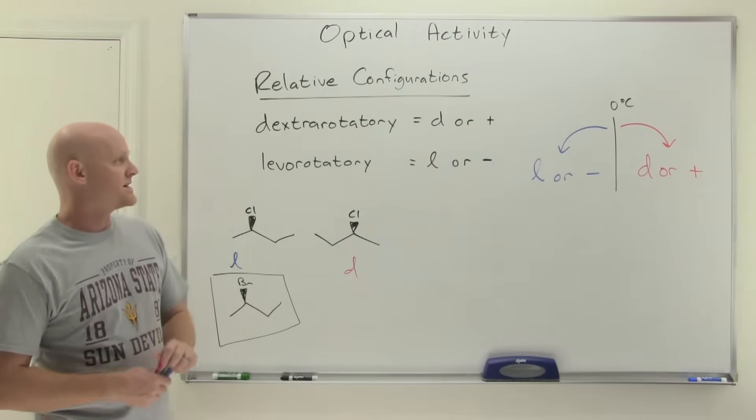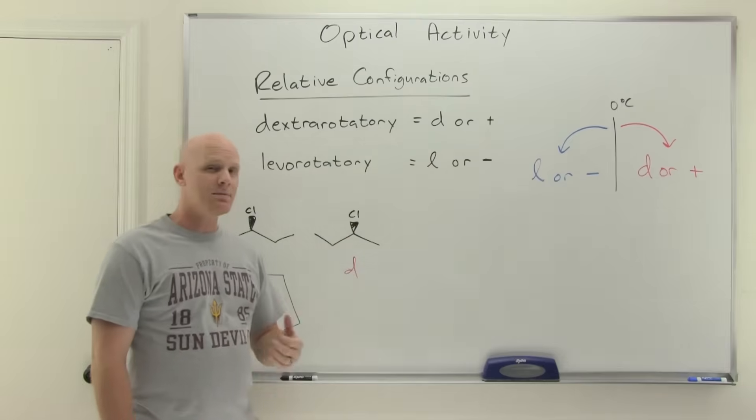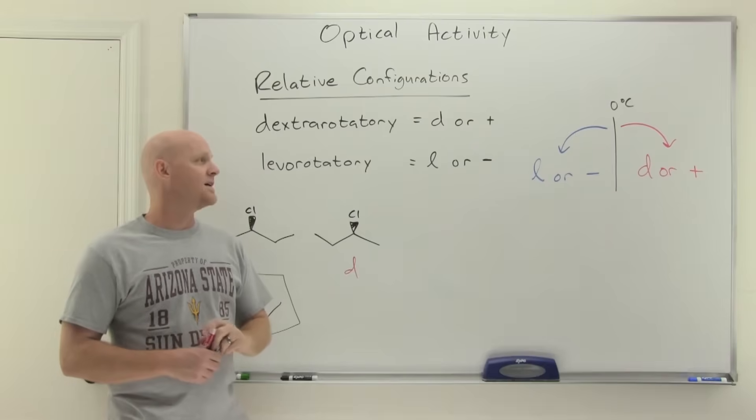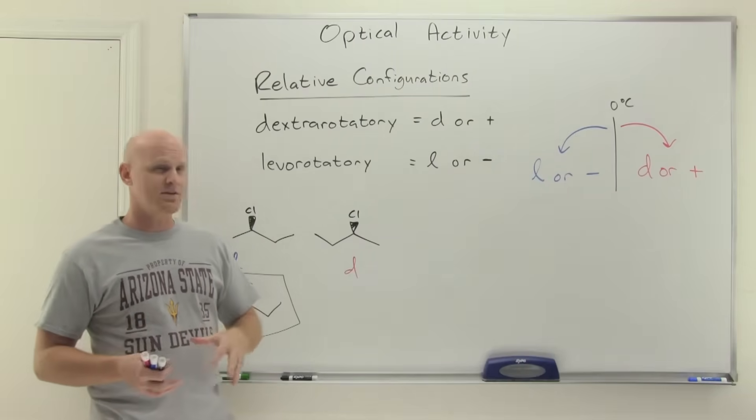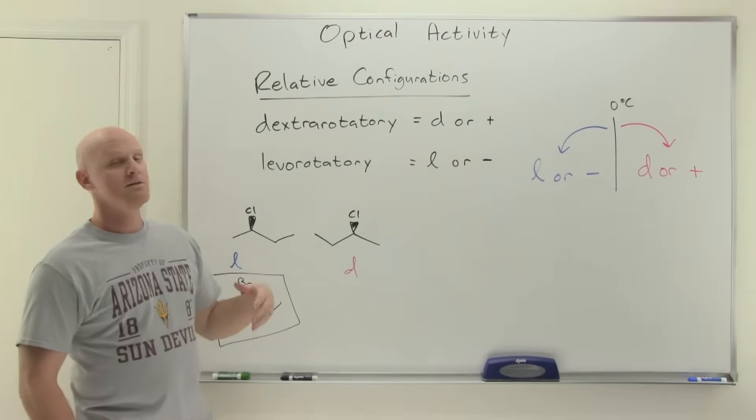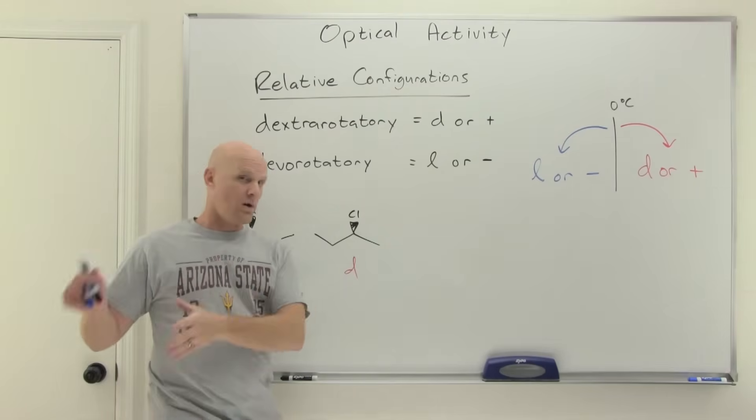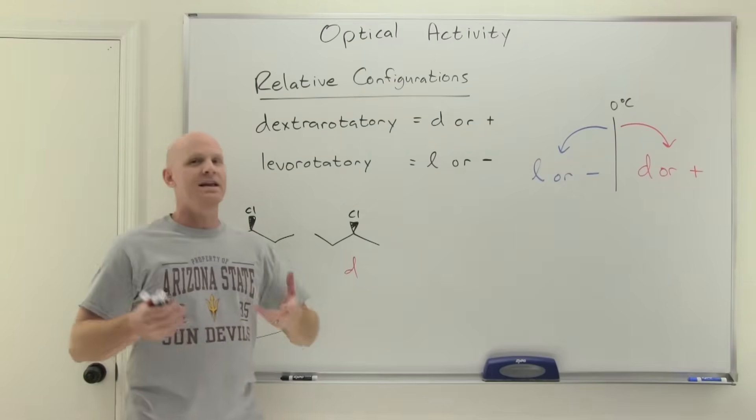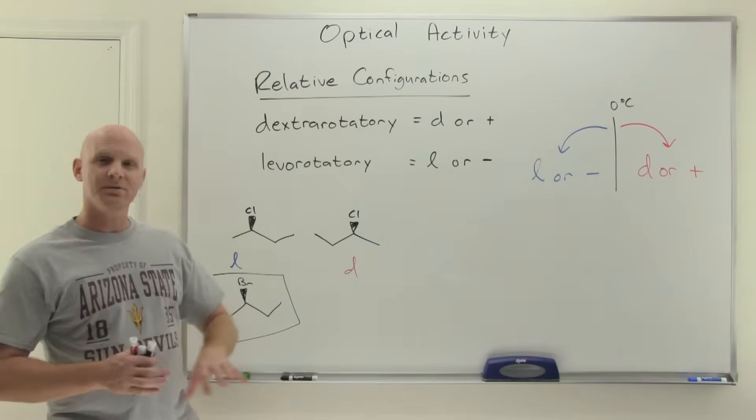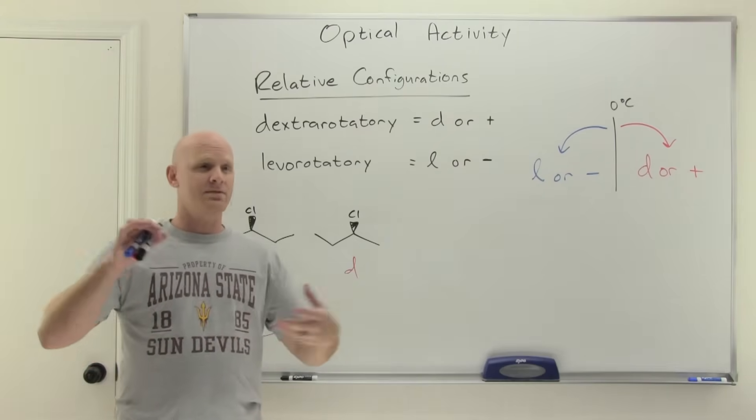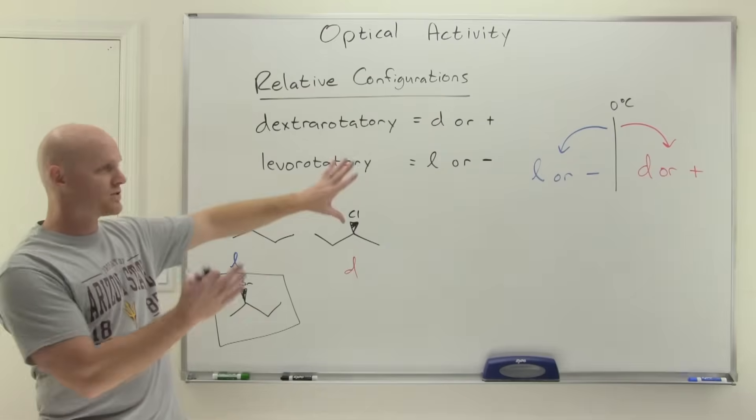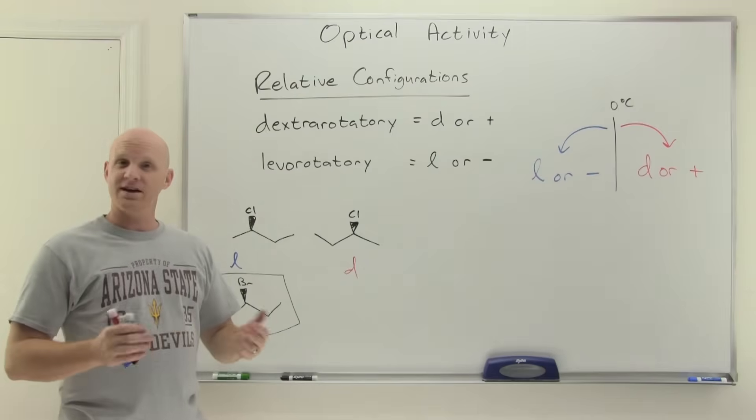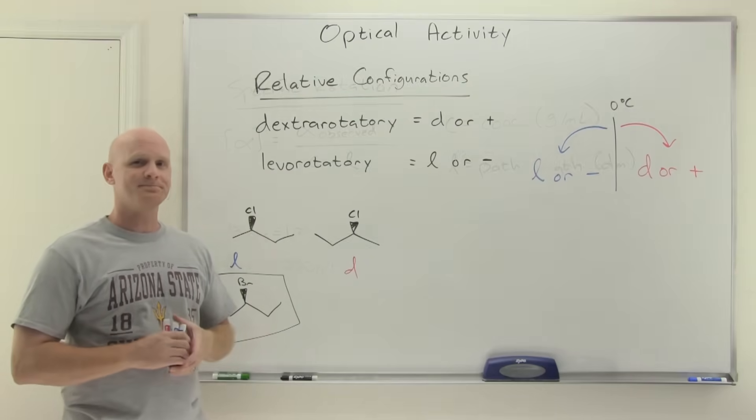So those are our relative configurations here. And back in the day, they used to name your different enantiomers using these. So it turns out back in the day before we really got using NMR extensively and stuff like that, they had a really difficult time figuring out which structure, the R or the S, actually matched up with which rotation. So it was a big problem. But now that we've got NMR and stuff, we can actually look and figure out which structure is which and which corresponds to which way the light is rotating and all that stuff. But up until fairly modern times, this was actually something that was rather challenging.